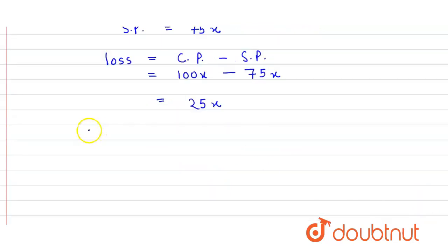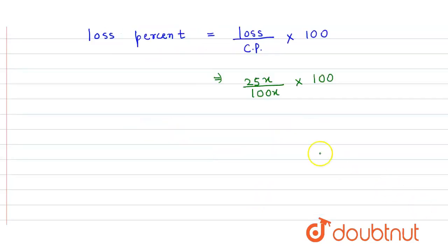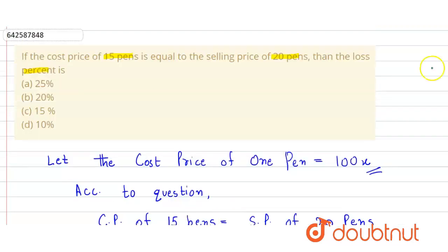In the question we have to find the loss percent. Loss percent equals loss divided by cost price into 100. Putting in the values: 25x divided by 100x, into 100. The x cancels and the 100 cancels, so we get 25 percent. So option A is the right answer.